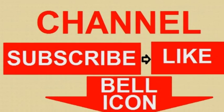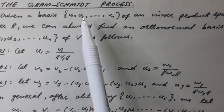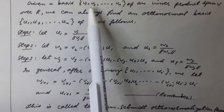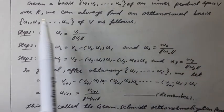The Gram-Schmidt process. Given a basis V1, V2, ..., Vn of an inner product space V over R,